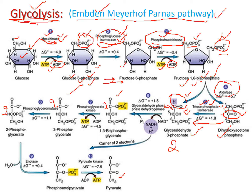Step six is a dehydrogenation reaction. Hydrogen is removed from glyceraldehyde-3-phosphate and one phosphate group is added to the molecule. The product, 1,3-bisphosphoglycerate, has two phosphate groups: the one that was already present, plus the one added in this step.